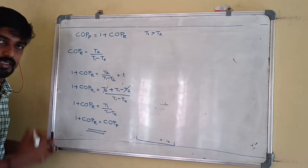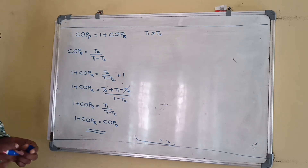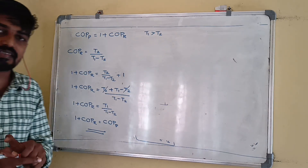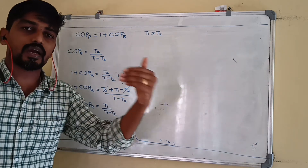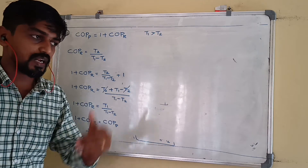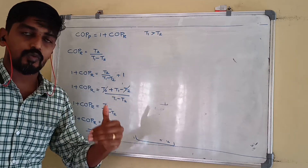One plus COP of refrigerator equals T2 divided by T1 minus T2, plus one. Combining over a common denominator T1 minus T2 gives T2 plus T1 minus T2 over T1 minus T2, which equals T1 over T1 minus T2. This is exactly the COP of the heat pump. Therefore, COP of heat pump equals 1 plus COP of refrigerator.